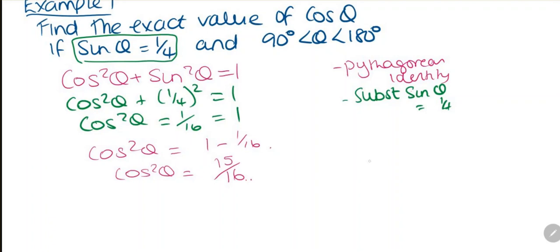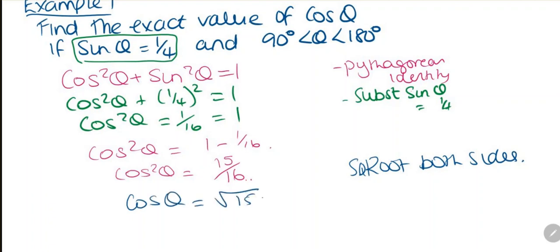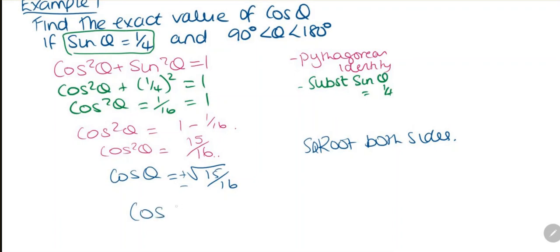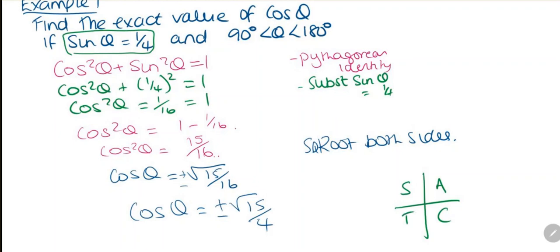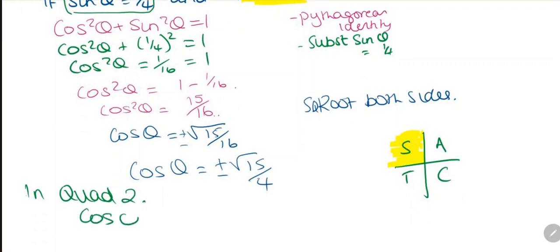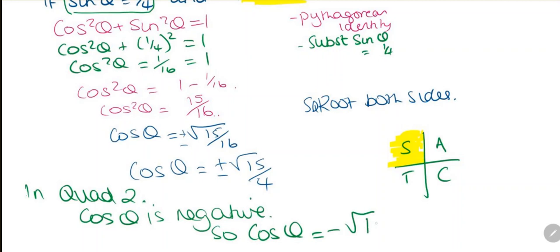Now I need to take the square root of both sides. So cosine theta equals plus or minus the square root of 15 over 16, which simplifies to plus or minus root 15 over 4. Now, looking at CAST, we are between 90 and 180, which is quadrant 2. In quadrant 2, cosine is negative. So cosine of theta equals minus root 15 over 4.